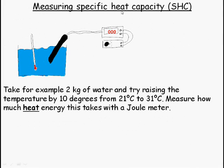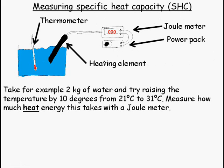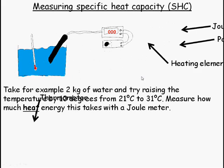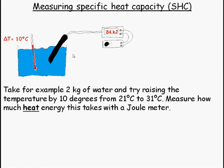Let's have a look at how we go about measuring the specific heat capacity of something like water. Take for example 2 kg of water, and try raising the temperature by 10 degrees from 21 degrees Celsius to 31 degrees Celsius, and measure how much heat energy this takes with a joule meter. So here I have a joule meter, a power pack, a heating element, and a thermometer. So the power pack supplies voltage and current. This thing tells me how many joules are going to go in. So I switch it on. I switch it on, I get the temperature rise, and it tells me it took 84 kilojoules to do that. So I've switched it off now. It's taken 84 kilojoules to raise the temperature by 10 degrees Celsius.